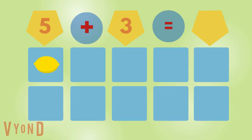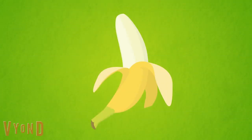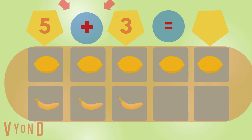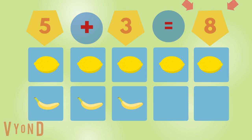Lemon. One, two, three, four, five. Five lemons. Banana. One, two, three. Three bananas. One, two, three, four, five, six, seven, eight. Eight fruits.